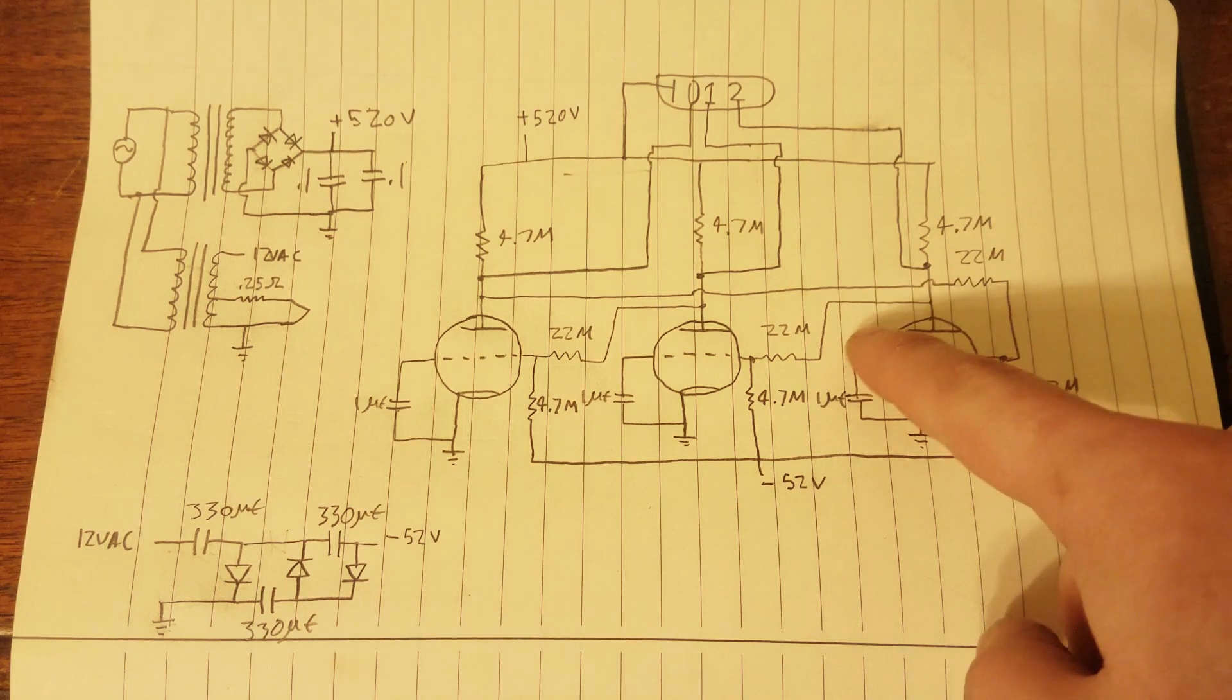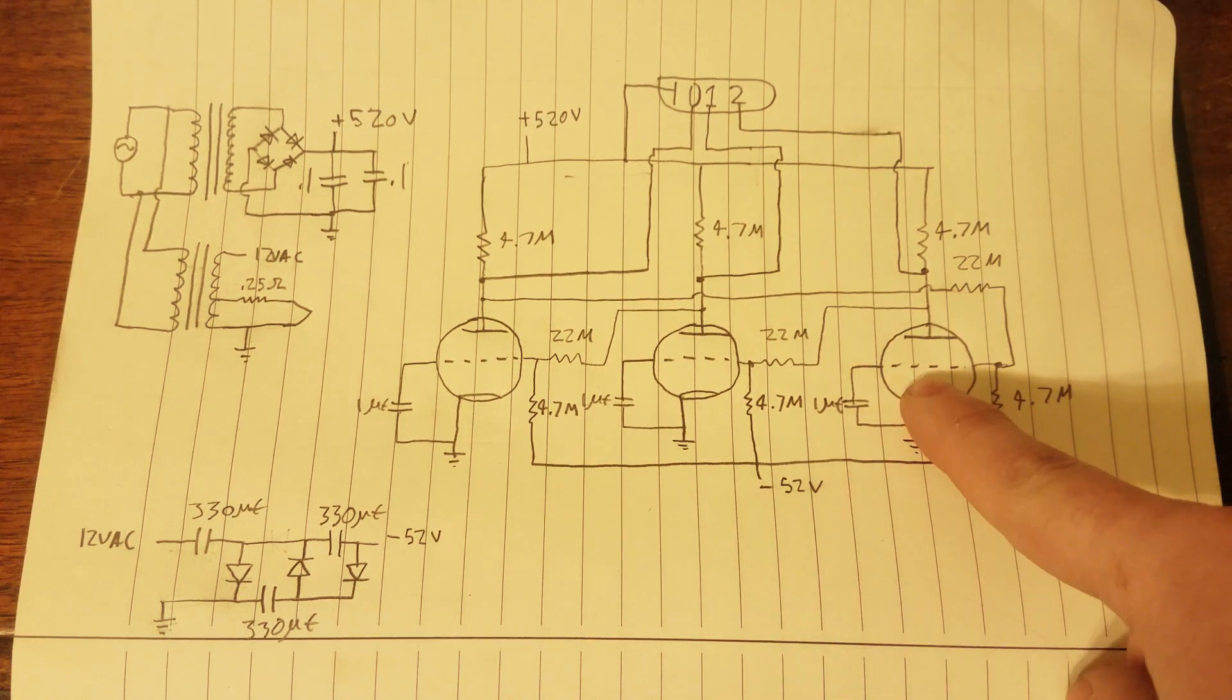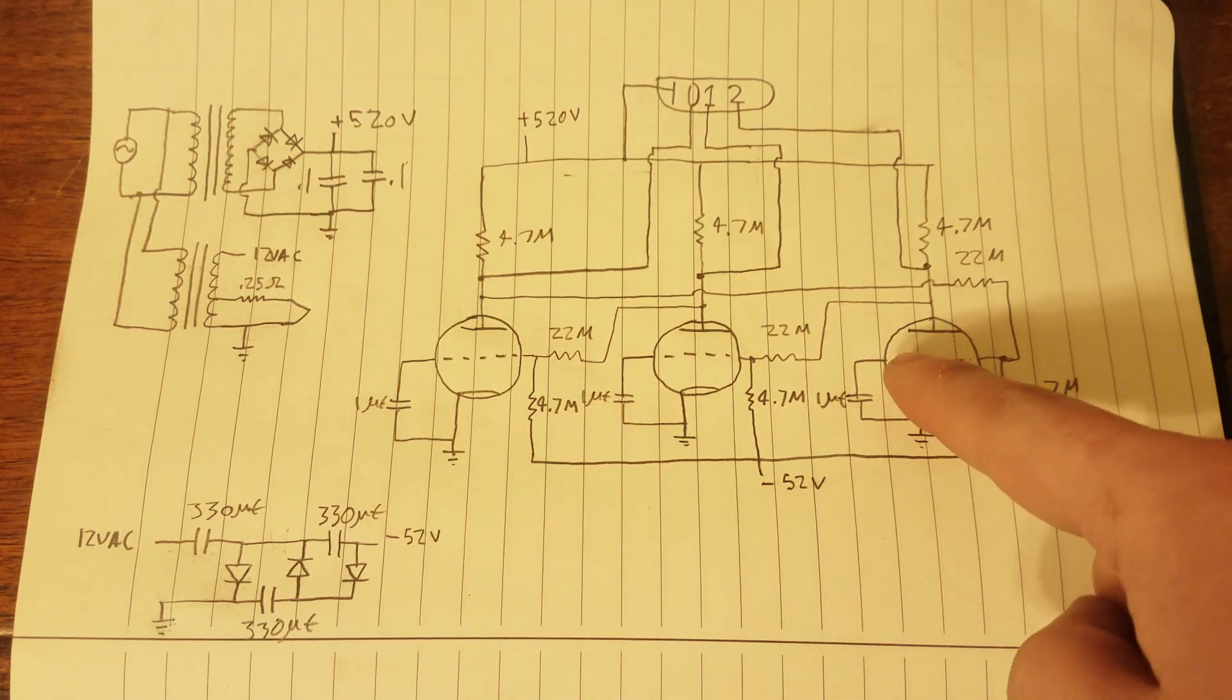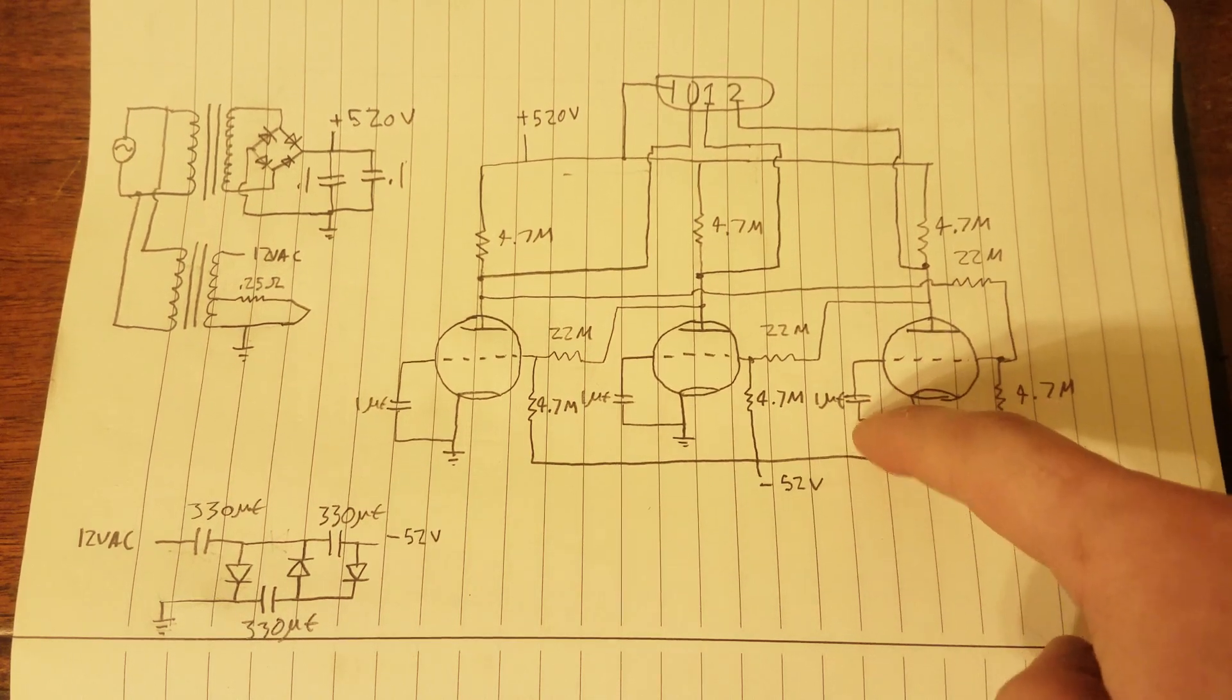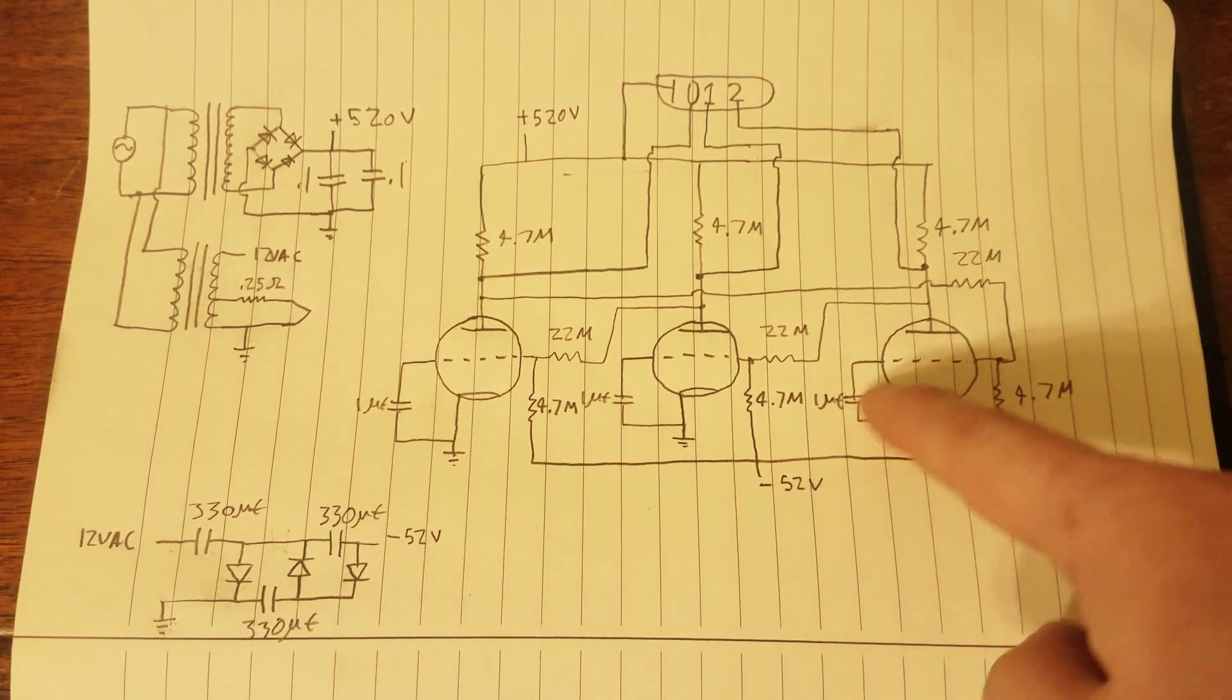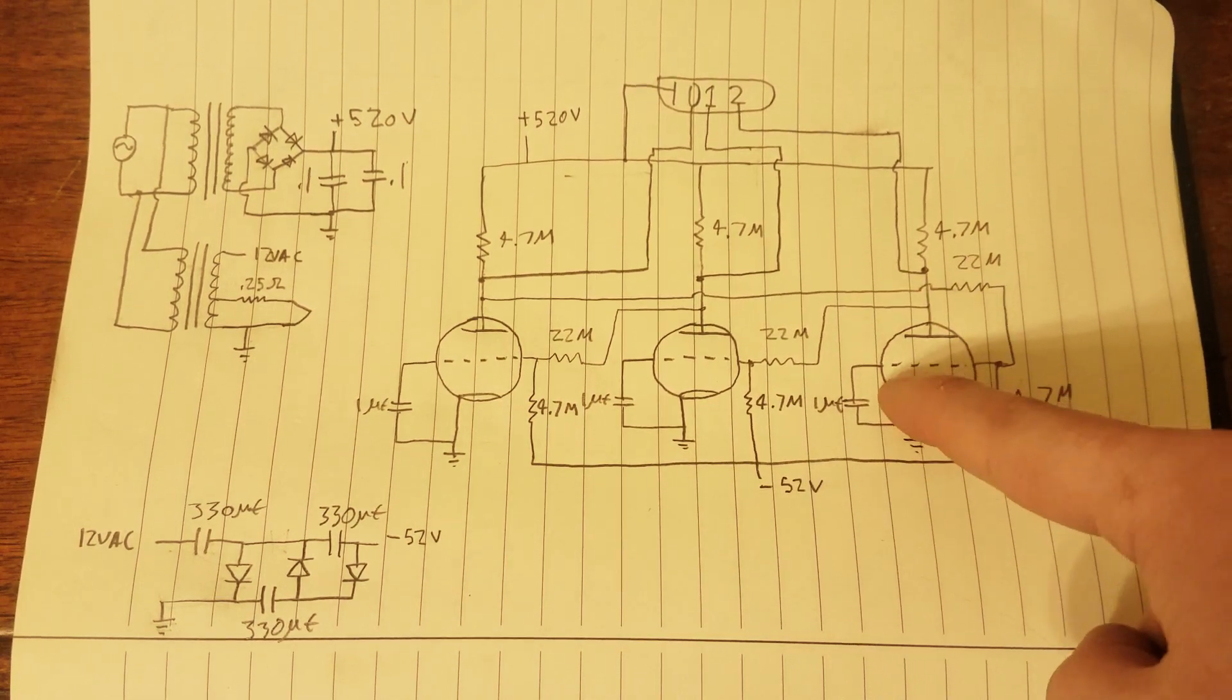And this capacitor along with these resistors forms a delay element. So let's just assume that this tube right here is turned on. But there's no longer any supply causing it to turn on. The reason it will stay on is because it has charge stored up in this capacitor that will keep it on, even though there's no longer any signal coming back to make it turn on.